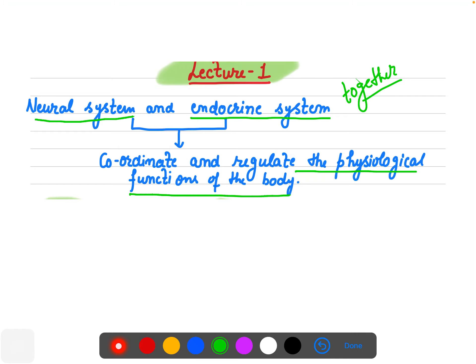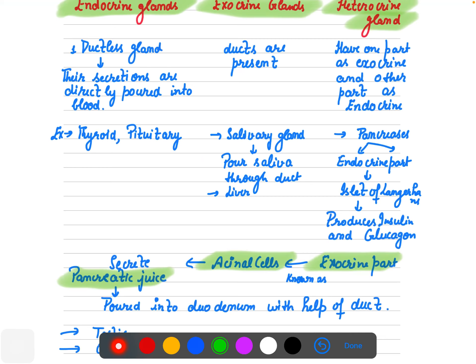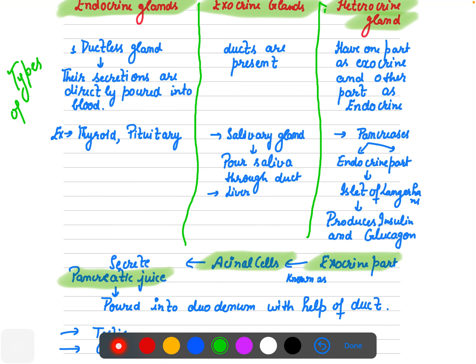In this slide I have covered the types of glands. You can put a heading: 'Types of Glands.' There are mainly three types of glands we will discuss: endocrine glands, exocrine glands, and heterocrine glands.